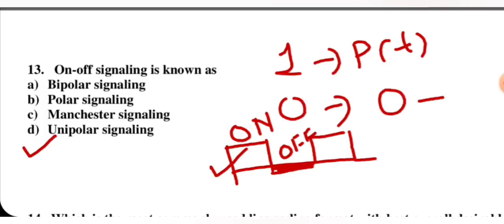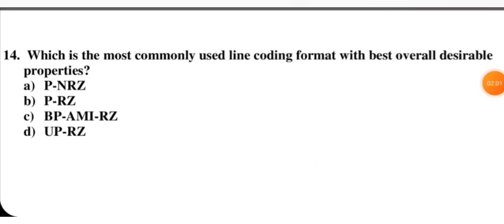Which is the most commonly used line coding format with the best overall desirable properties? The answer is bipolar AMI NRZ — this is the best one with overall desirable properties.